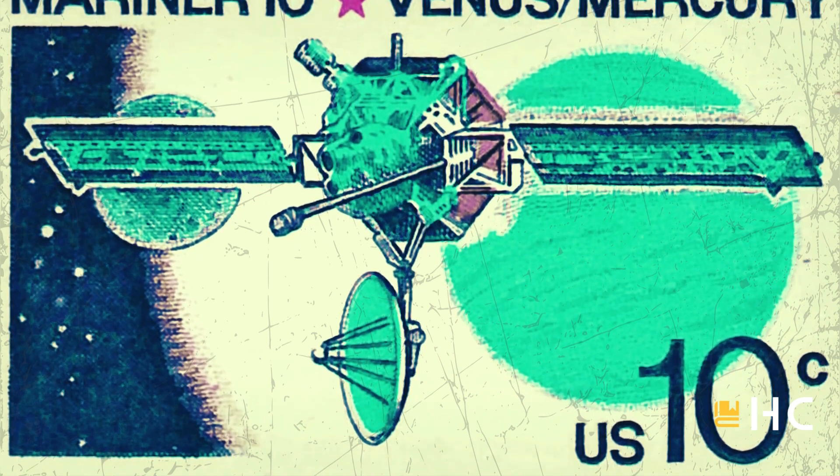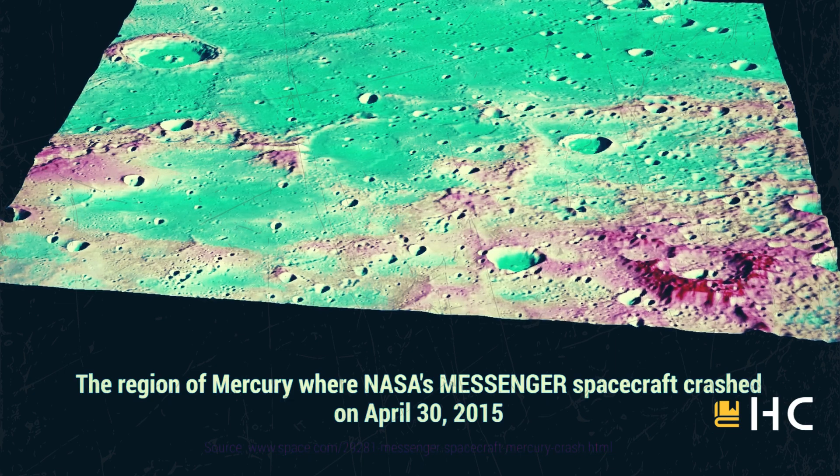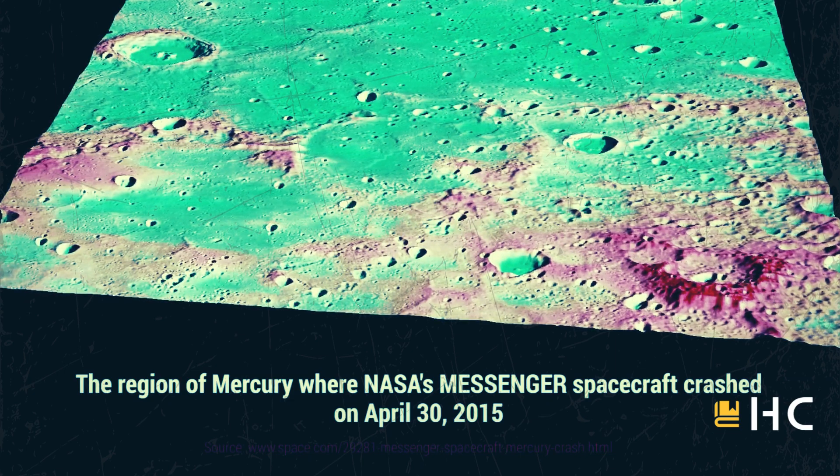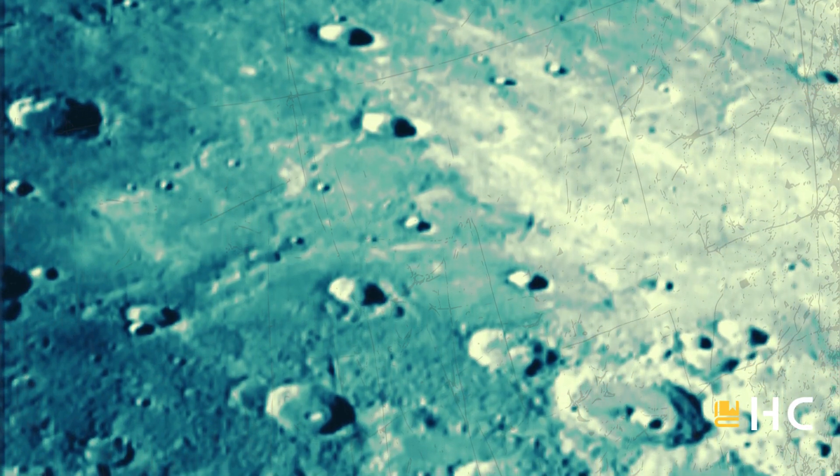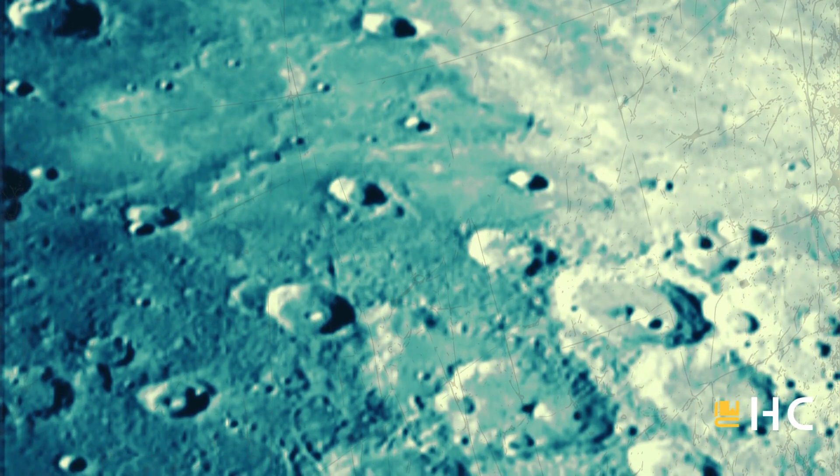But the second mission, the Messenger, was a robotic spacecraft. After research around Mercury and sending its excellent pictures for four years, it ended itself by crashing on Mercury in April 2015. Whatever information of Mercury available today is credited to the pictures sent by the Messenger.